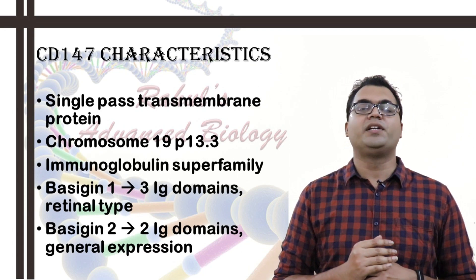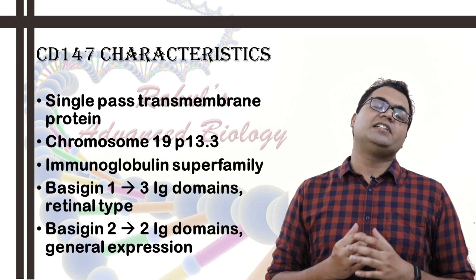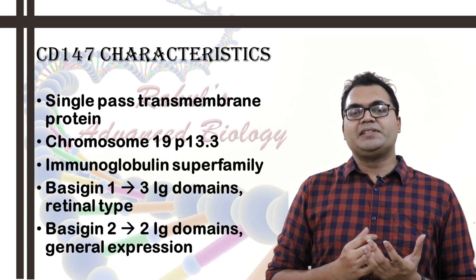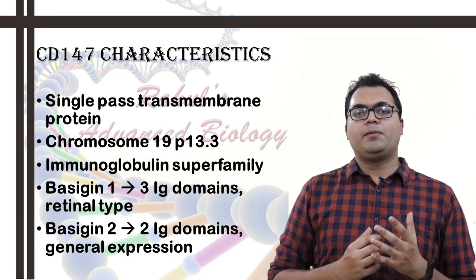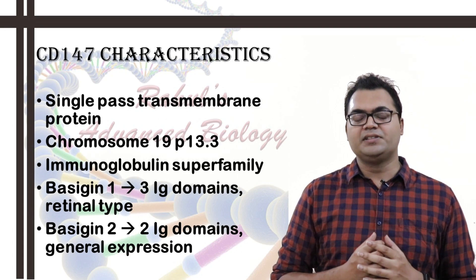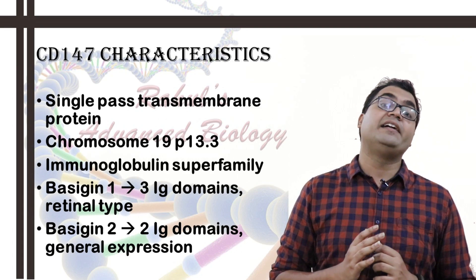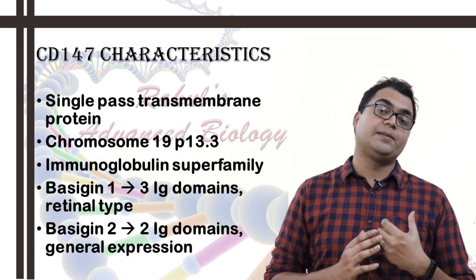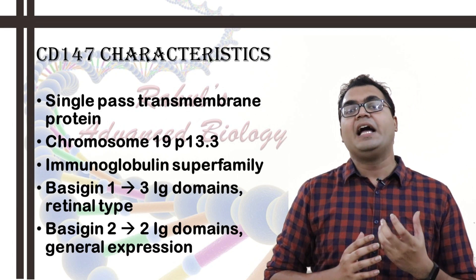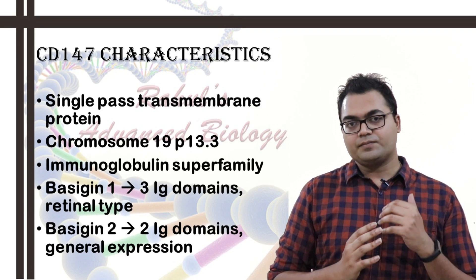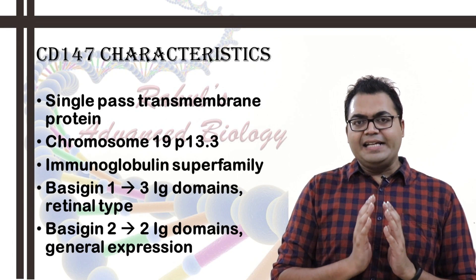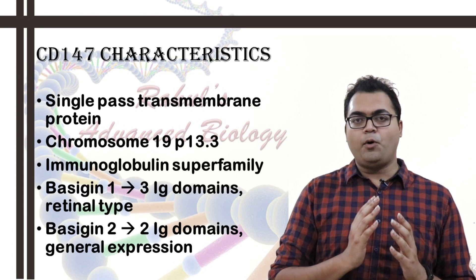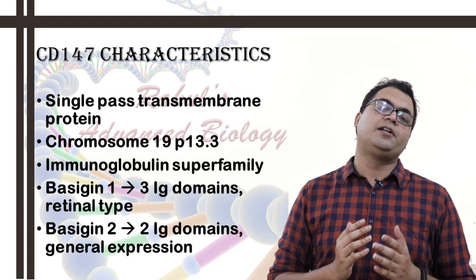Now, what is CD147? CD147 or cluster of differentiation 147 is present on chromosome 19, petite arm or short arm. It has 10 exons. It is a heavily glycosylated protein, meaning glycosylation happens after translation — a post-translational modification occurring in the Golgi apparatus. It is a single-pass transmembrane protein with a molecular mass of 50 to 60 kilodaltons.